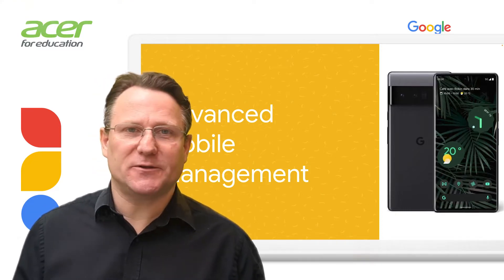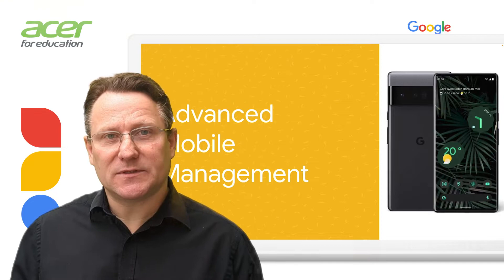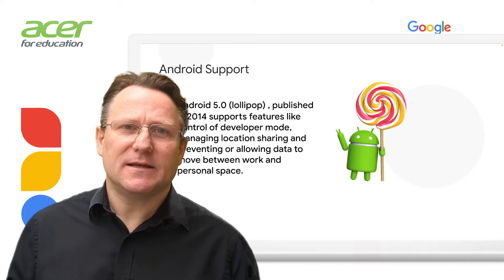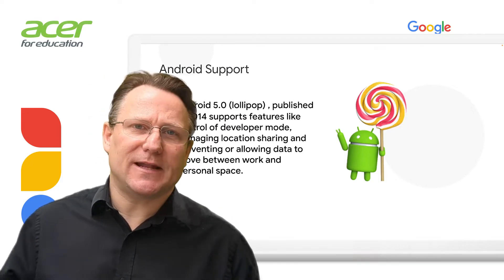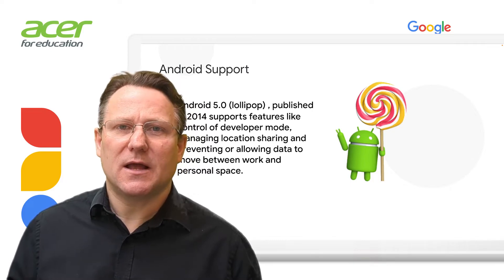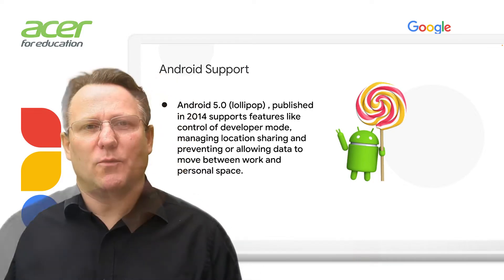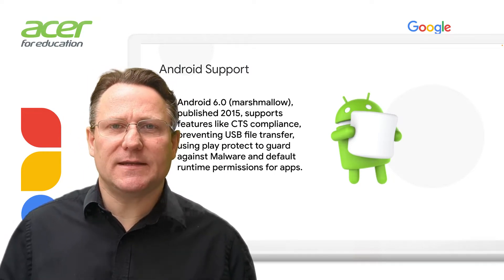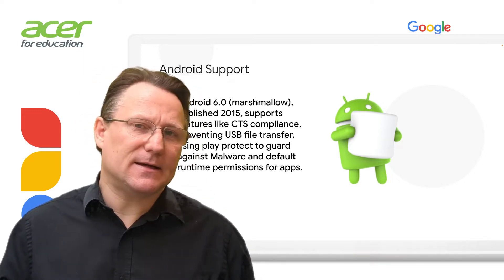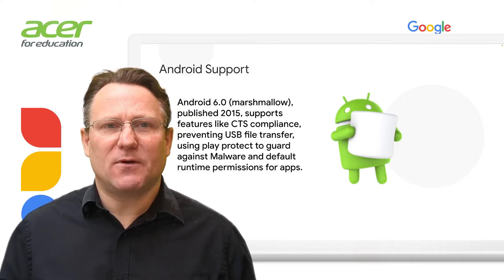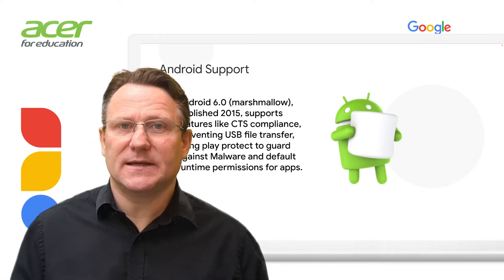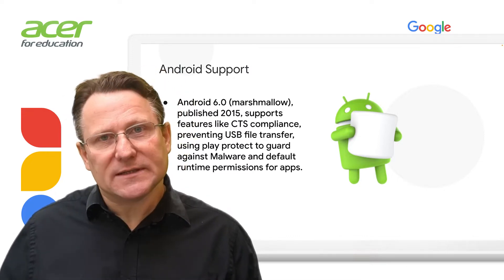Google Workspace supports a variety of versions of Android with different management features available depending on the Android version you're using. For Android 5 devices (Lollipop, published in 2014), supported features include control of development mode, managing location sharing, and preventing or allowing data to move between work and personal space. With Android 6 (Marshmallow, published in 2015), you get support for CTS compliance, preventing USB file transfer, using Play Protect to guard against malware, and setting default runtime permissions for apps. Generally, admins can use policies to manage devices, and a greater range of features will be available on more recent Android devices.